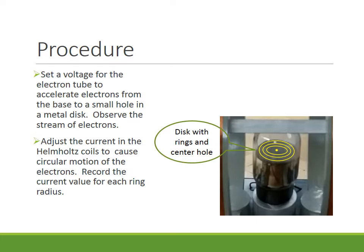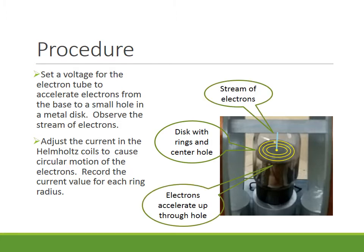On the metal disk, I'm highlighting the etched rings and the center hole. The electrons accelerate up from the bottom of the tube up through a hole that I've highlighted as sort of a blue line that's going to be what the electrons will appear to be.